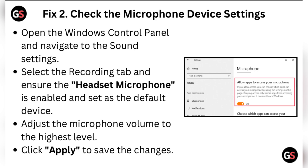Fix two: check the microphone device settings. Open the Windows Control Panel and navigate to the Sound settings. Select the Recording tab and ensure the headset microphone is enabled and set as the default device. Adjust the microphone volume to the highest level.